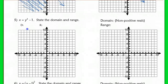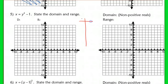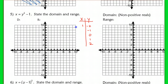The next example: x = y² − 1. I'll start with my xy table, picking values to plug in for y — standard negative 2 to 2. Squaring and subtracting 1: (−2)² − 1 = 3; (−1)² − 1 = 0; 0² − 1 = −1; 1² − 1 = 0; 2² − 1 = 3. So my points are (3,−2), (0,−1), (−1,0), (0,1), and (3,2).